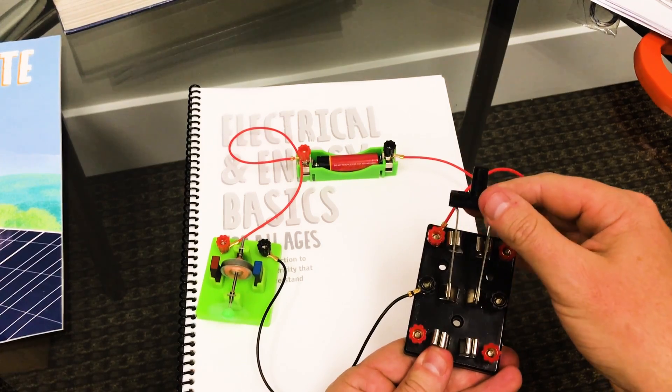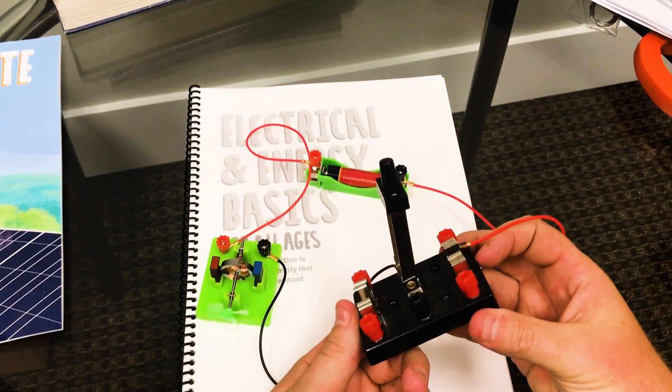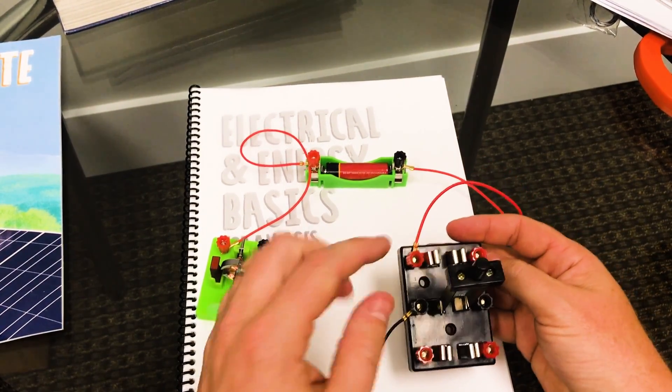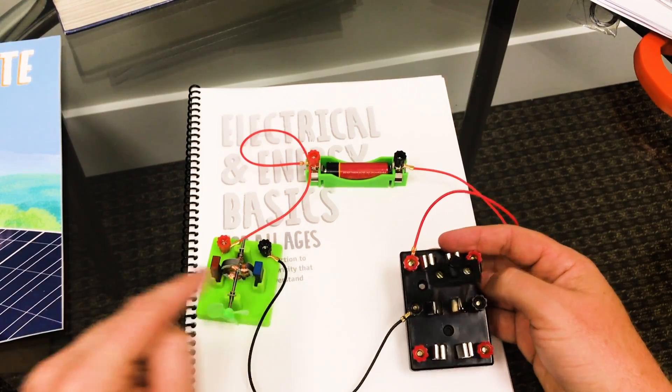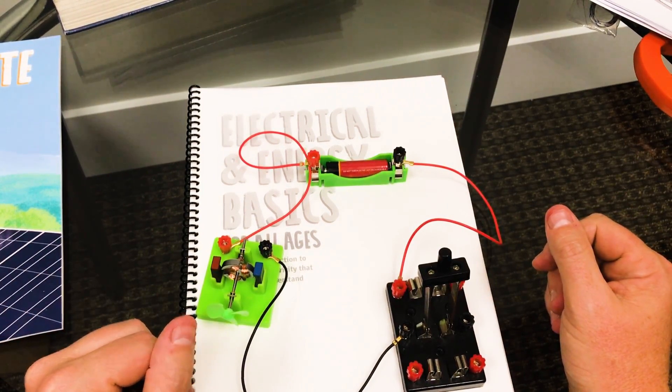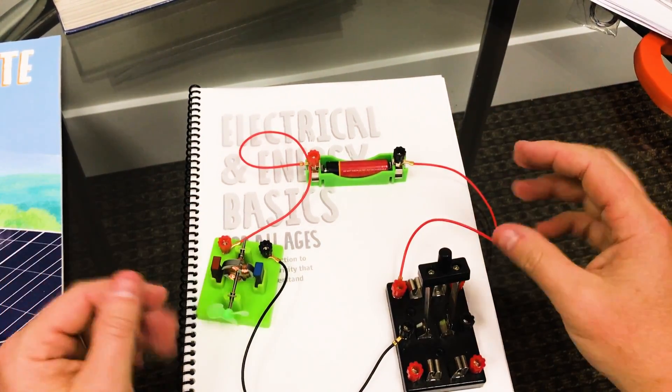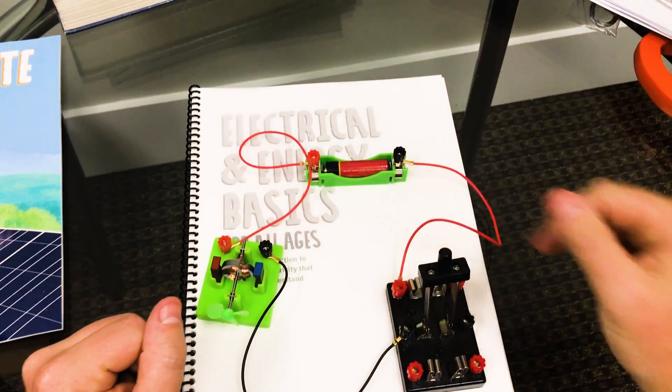So that is a closed circuit. As soon as I open the circuit, now the load stops operating, because now we no longer have a path. A lot of people will say electricity goes to ground. And this kind of proves that we've got no ground here.